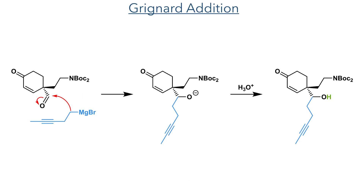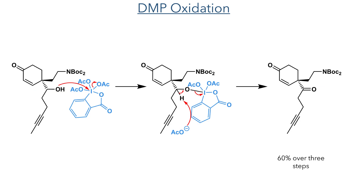This aldehyde was then reacted in a Grignard addition with 3-pentynal magnesium bromide. This added to the carbonyl to produce a secondary alcohol upon workup, which was then oxidised to a ketone using Dess-Martin periodinane. This first attacks the iodine centre, displacing one of the acetates, which can then act as a base to deprotonate the molecule, forming the ketone in a 60% yield over 3 steps.